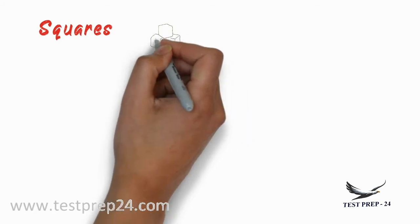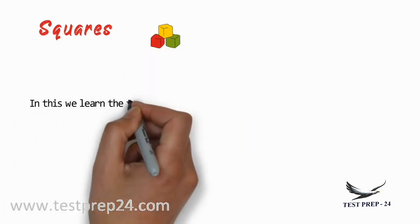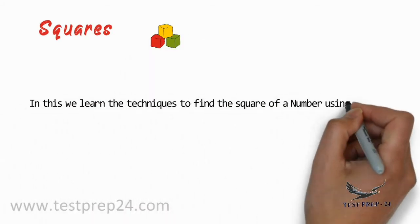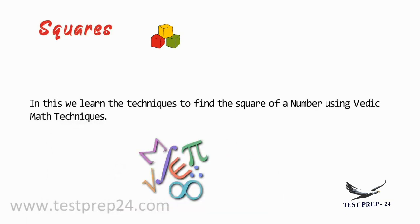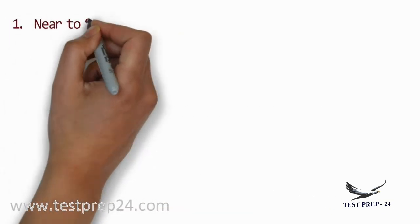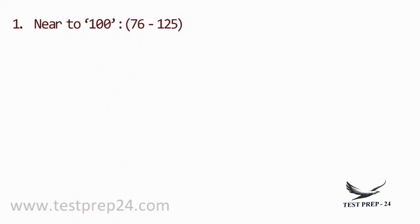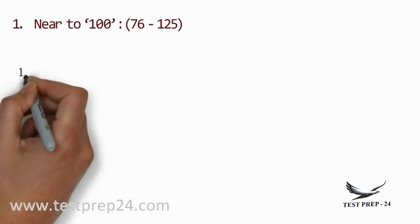Hi, in this we learn the techniques to find the square of a number using Vedic math techniques. The first one is to find the square of a number that is near to 100. The limit is from 76 to 125.